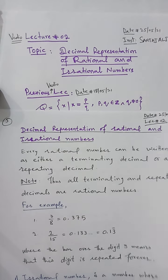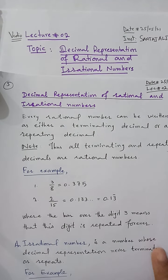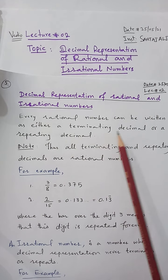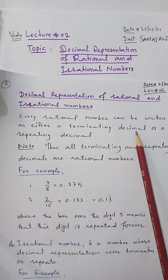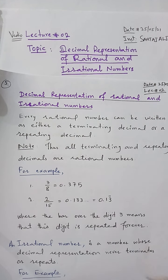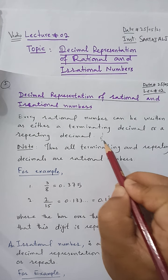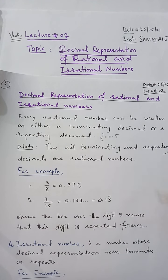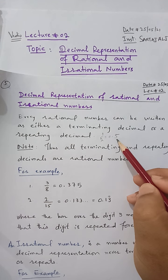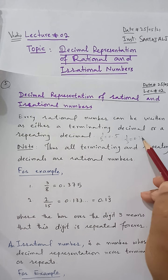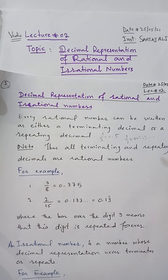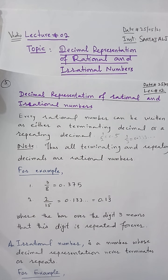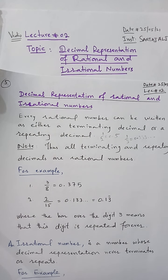Every rational number can be written as either a terminating decimal or a repeating decimal. For example, 1/2 = 0.5 is a terminating decimal, and 1/3 = 0.333... is a repeating decimal that never terminates but repeats. Both cases are rational numbers. Thus all terminating and repeating decimals are rational numbers.